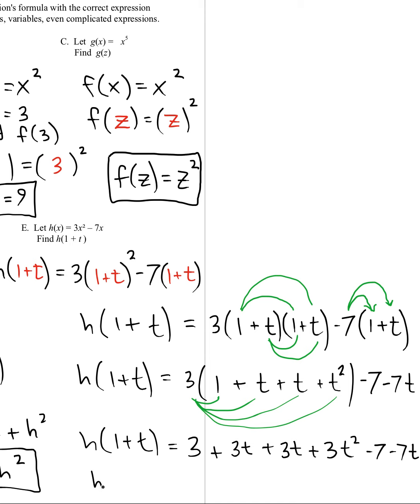All right, so let's go ahead and now we'll combine some of the like terms. Like three minus seven, for example. That's going to be a minus four. They're both numbers, so they could combine.